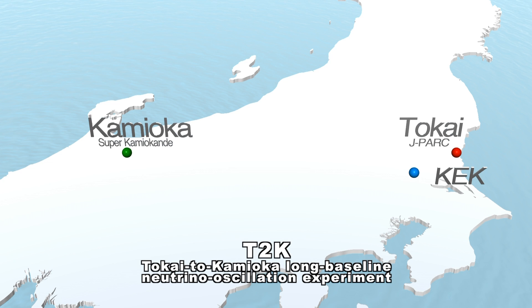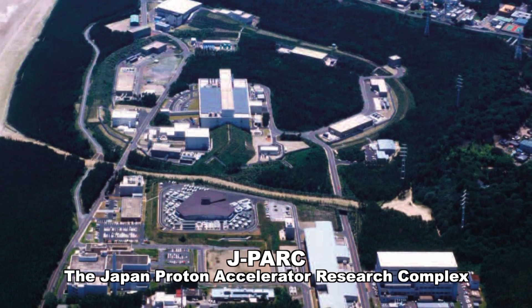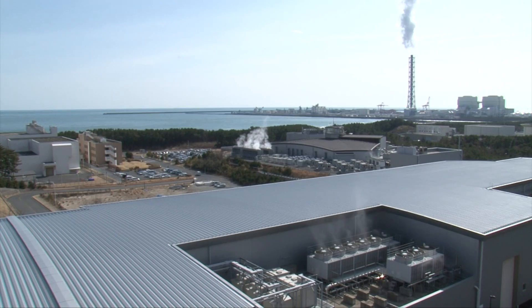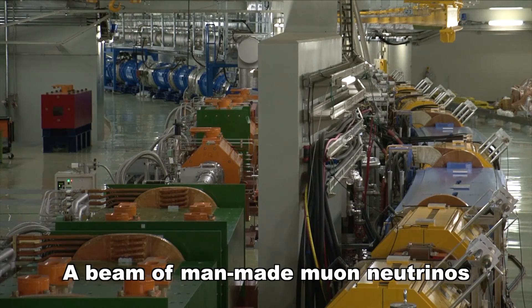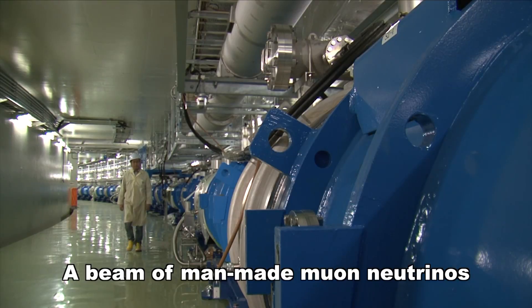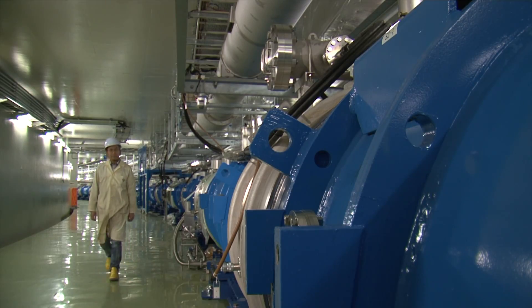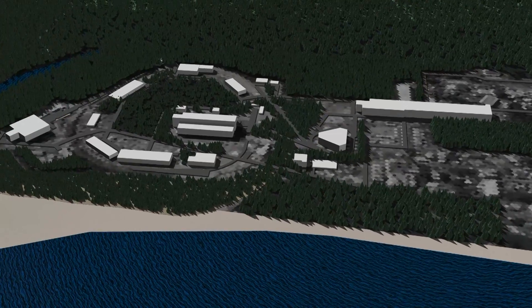This is the long baseline neutrino oscillation experiment from Tokai to Kamioka called T2K. This is J-PARC, the Japan Proton Accelerator Research Complex Facility in Tokai, Ibaraki Prefecture. Here scientists produce an artificial beam of muon neutrinos from a proton beam. Let's take a look at the T2K experiment in more detail.